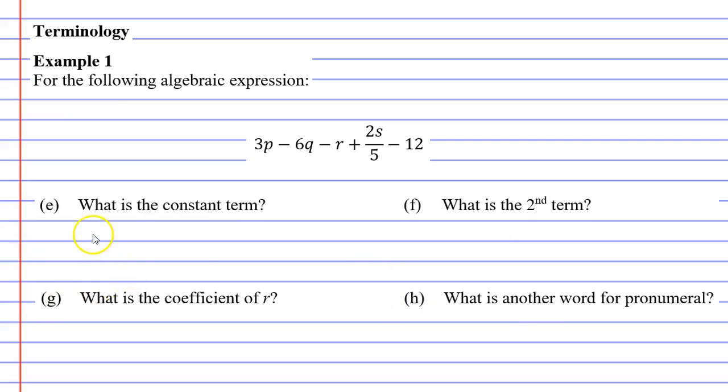Okay, let's now move on to question E. It says, what is the constant term? And the constant term is the number that doesn't have a pronumeral next to it. It's the number 12. Remembering that in front of this 12, we have the minus sign. So our solution to E is not 12, it's negative 12.